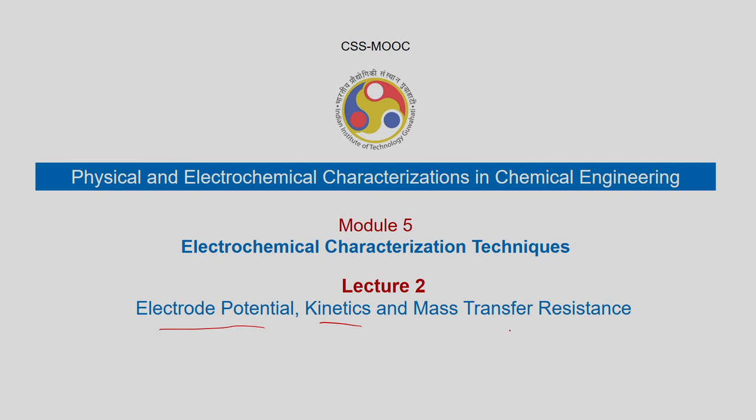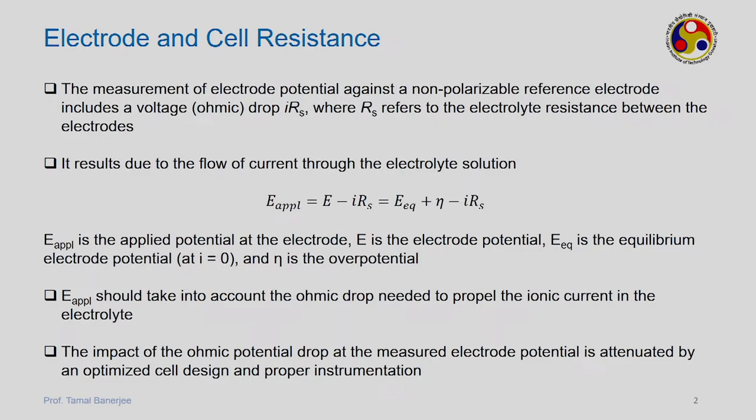Unlike a normal chemical reaction in chemical reaction engineering where A reacts with B to give C — which is homogeneous, either in gas phase or liquid phase — here you must account for the interface between the electrode and the electrolyte. There are other effects: bulk diffusion, surface effects, desorption, adsorption, and then the reaction. All these come into play, so these are heterogeneous reactions.